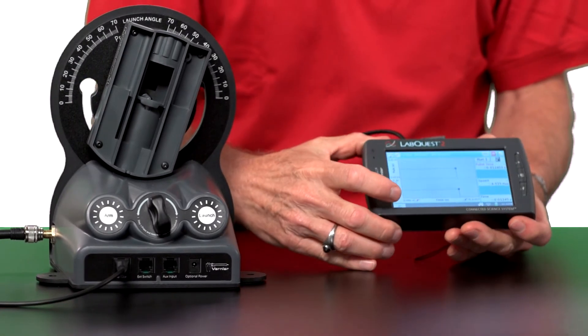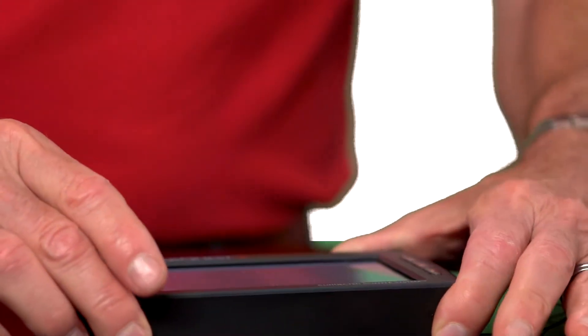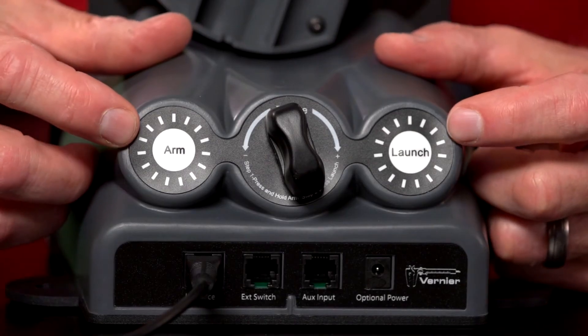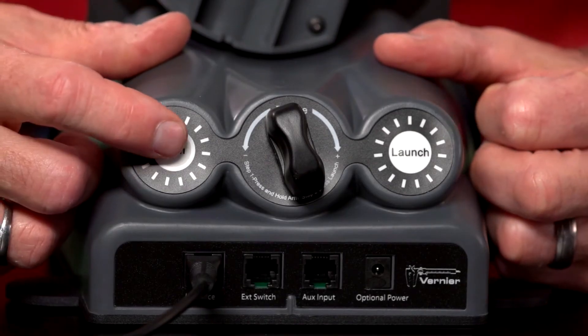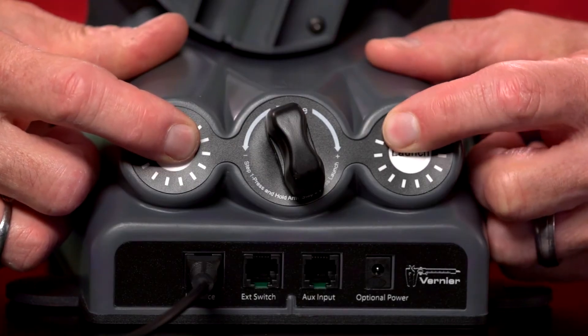Now, I want to start data collection on my interface because I do want to get the speed. And one more safety feature is to launch the ball, I have to both hold the arm button and the fire button at the same time. And let's give it a shot.